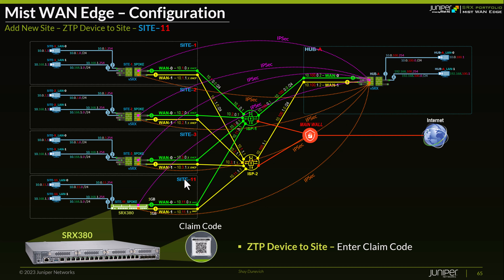Essentially, each site that you onboard creates two IPsec tunnels going from the spoke to hub A. If you have two hubs, it would go to two hubs. But for the purpose of this series of videos, we're going to be using one single hub — though in a real deployment you would probably have two hubs.